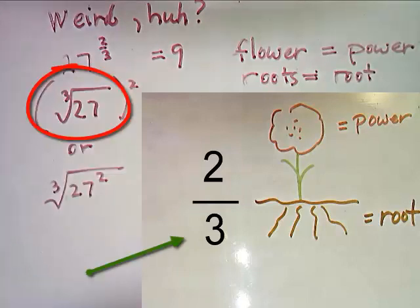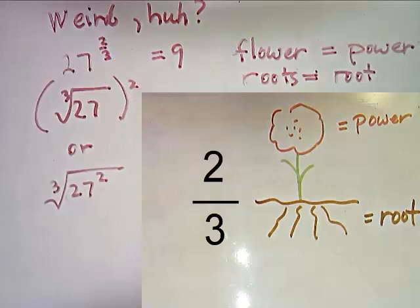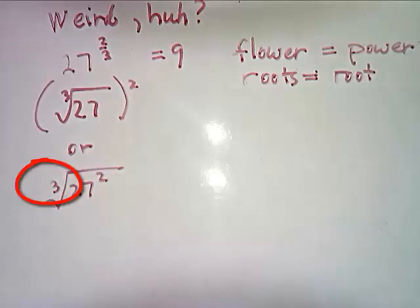So we could write this as the cube root of 27 first, then raise it to the 2nd power. Or we can raise 27 to the 2nd power first, then cube root the result.